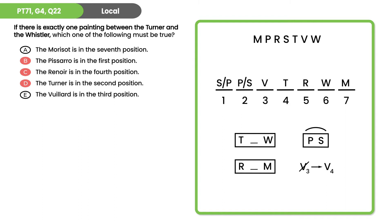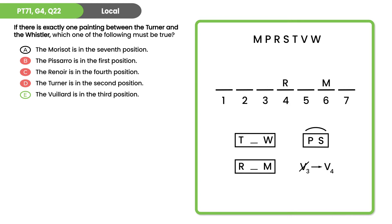If we try to put V in the fourth position instead of third: putting R and M into first and third, T and W in five and seven separated by one — but we can't keep P and S consecutive. So V can't go fourth. Testing whether M must be seventh: putting M in sixth with R in fourth, V third, P and S in one and two, T and W in five and seven — perfectly valid, so A does not have to be true. Eliminating A leaves E as the right answer: V must be in the third position.